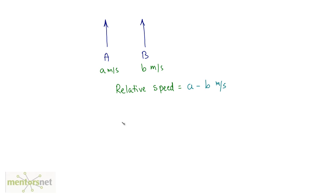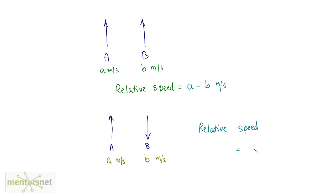Now let us take another situation. Now the objects are traveling in opposite directions. So the relative velocity — or the relative speed — will be equal to the addition of these speeds. So a plus b meters per second. When the objects are moving in the same direction, you subtract their speeds to get the relative speed, and when they are moving in opposite directions, you add up their speeds.